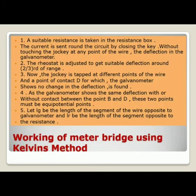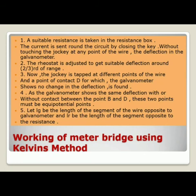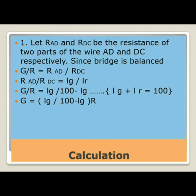For working with Kelvin's method: a suitable resistance is taken in the resistance box. The current is sent through the circuit by closing the key without touching the jockey, and deflection in the galvanometer is noted. The rheostat is adjusted to get a suitable deflection of around two-thirds of the range. The jockey is tapped at different points of the wire and point D, for which the galvanometer shows no change in deflection, is found. Since the galvanometer shows the same deflection with or without contact between B and D, these two points are equipotential.